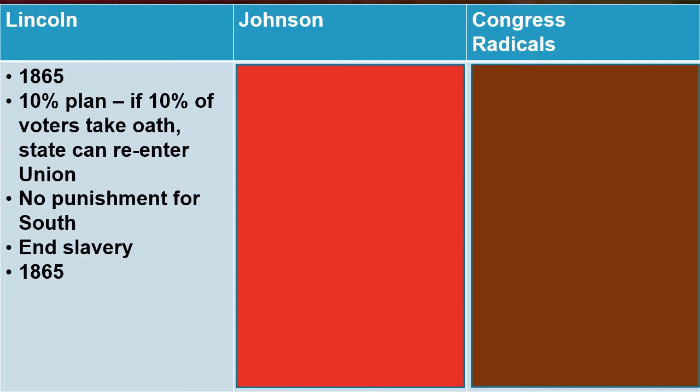That's a pretty low number, because the opposite side is 90%. So that means 90% of a state could say they hate Lincoln, hate the union, and don't care — but 10% by themselves could bring that state back into the union. Lincoln's plan featured no punishment for the South.